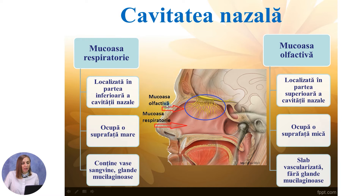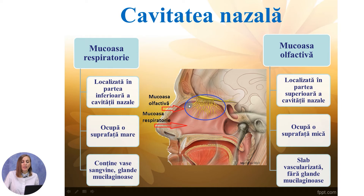Cavitatea nazală este formată, după cum știți, din mucoasa respiratorie și mucoasa olfactivă. Mucoasa respiratorie este localizată în partea inferioară a cavității nazale, ocupă o suprafață mare și conține vase sangvine și glande mucilaginoase. Mucoasa olfactivă, însă, este localizată în partea superioară a cavității nazale, ocupă o suprafață mai mică și este slab vascularizată și nu conține glande mucilaginoase.